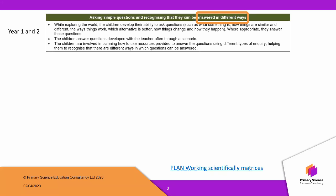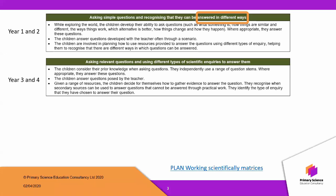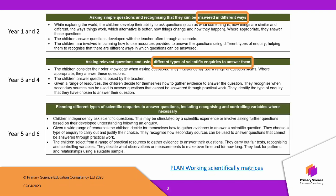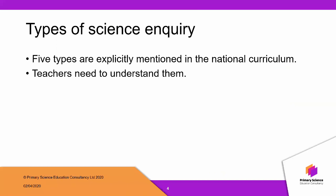This particular document is from the Plan working scientifically matrices. The national curriculum statement is in green and the bullet points are additional bits of advice as to what that statement means. Looking into Year 3 and Year 4, there's a statement about asking questions and it does mention using different types of scientific inquiry to answer them. In Year 5 and Year 6, similarly, there's a statement about planning different types of science inquiry to answer questions. So this idea of using science inquiry is firmly embedded within the national curriculum.